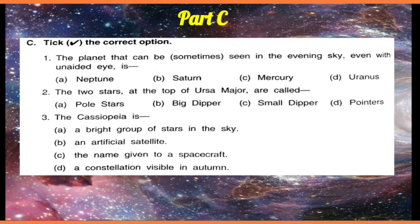Then part C — tick the correct option. The planet that can sometimes be seen in the evening sky even with unaided eyes. You can see it — the options are Neptune, Saturn, Mercury, Uranus — and that is Mercury.